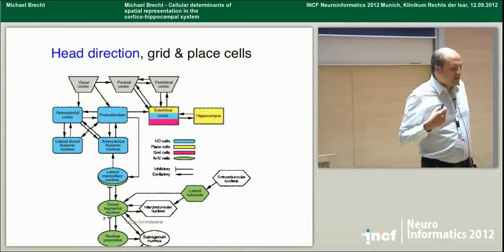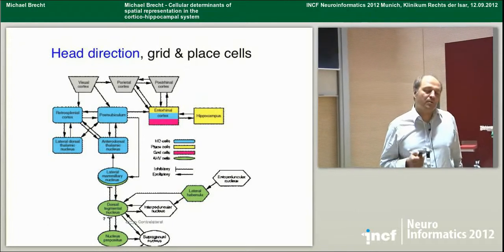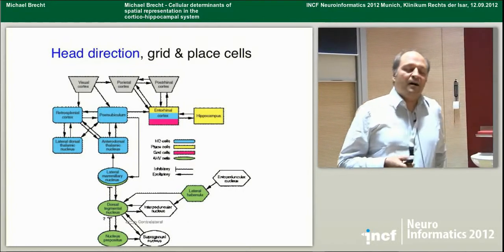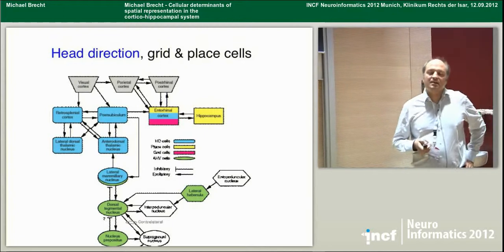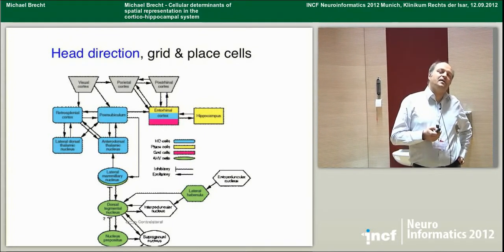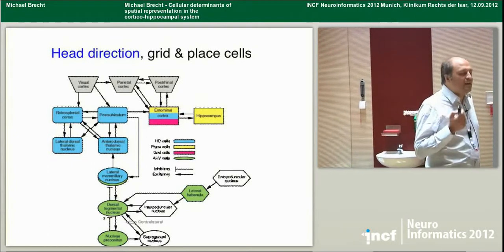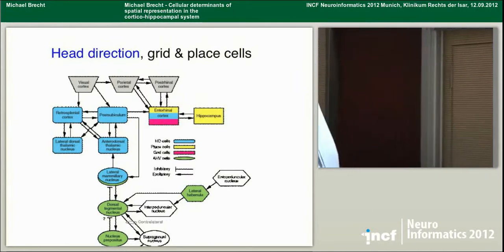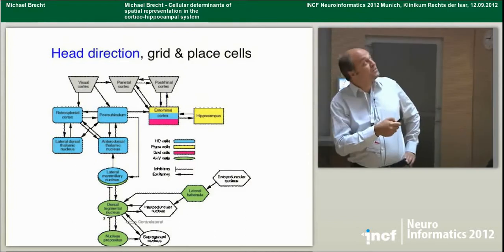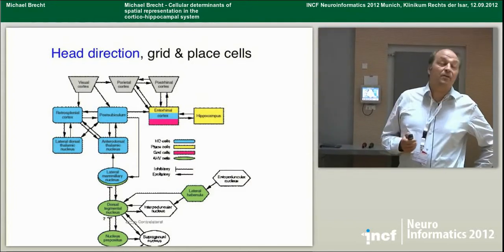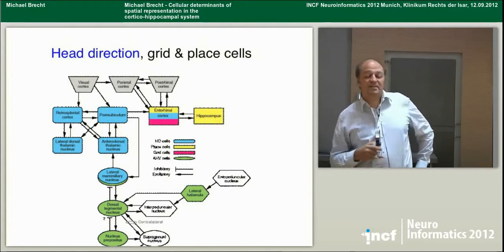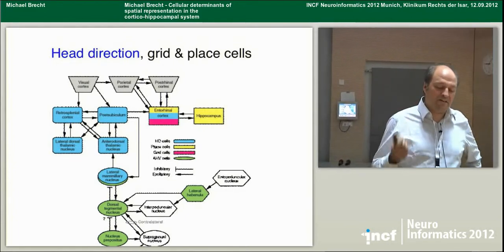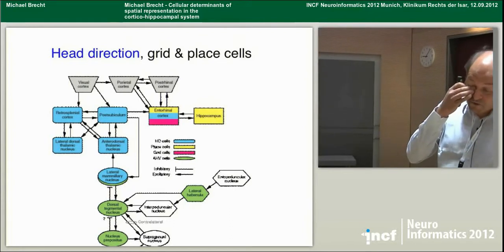The study of cellular activity in the corticohippocampal system has been one of the most fascinating stories in neuroscience in the last decades. It somehow didn't end up in the Nobel Prize yet, but what was so stunning about the work in cellular neuroscience of the hippocampal system is a series of discoveries — the discovery of place cells by O'Keefe and Dostovsky, then head direction cells by Taube and Muller.